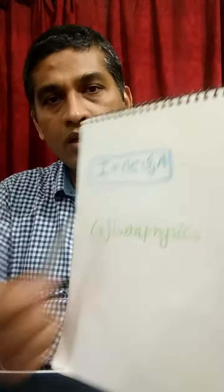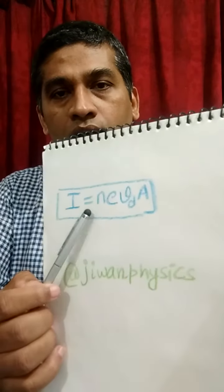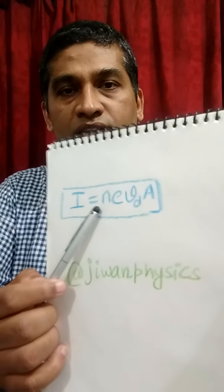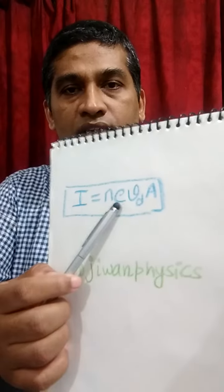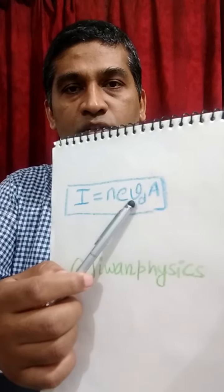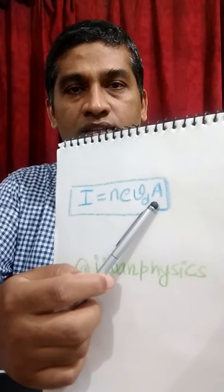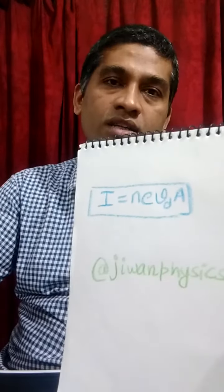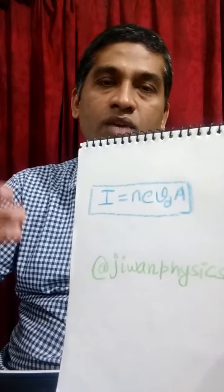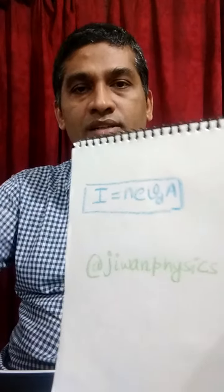We use this relation: I equals n, the number density of free electrons; e, the charge on a single electron; Vd, the drift speed of free electrons; and A, the area of cross-section of the conductor. In order to explain why the conductivity of electrolyte is less than that of metals,